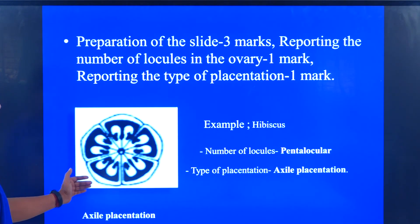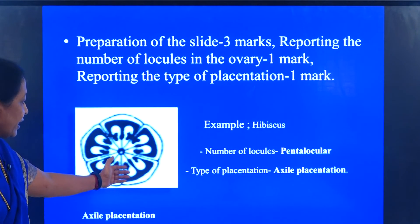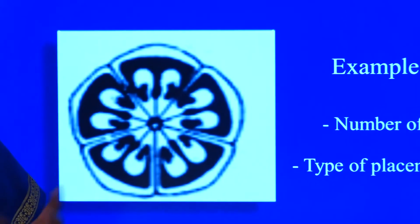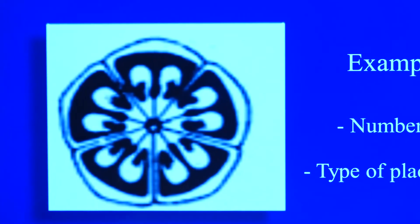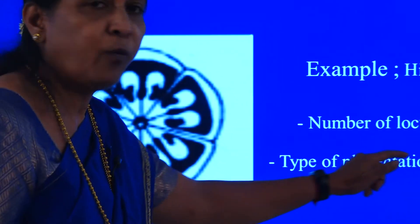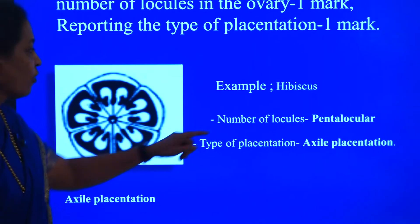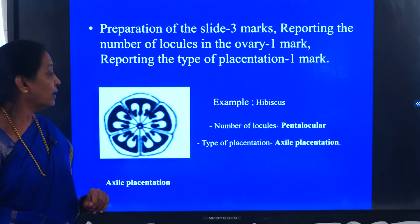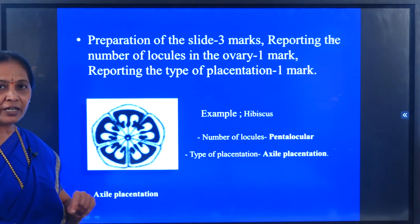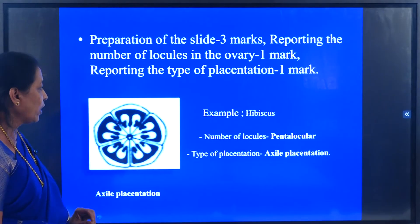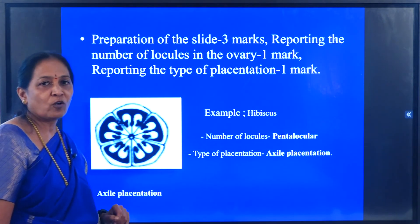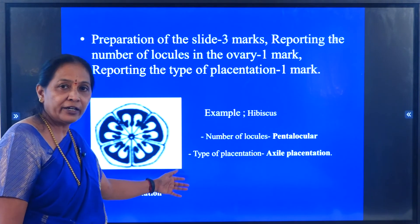When we observe the transverse section of the ovary, it is pentalocular — penta refers to 5, so there are 5 locules. The type of placentation found here is always axial placentation. For the hibiscus, when we take a transverse section of the ovary, the number of locules is pentalocular and the type of placentation is axial placentation. You have to write this in your answer script.